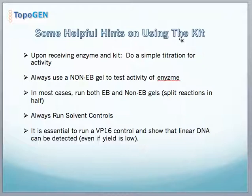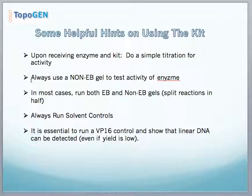Here are some helpful hints on using the kit. When you get the kit and enzyme, it's a great idea to do a simple titration for activity. These enzymes are expensive, difficult to produce, and unstable, so make sure the product you receive works for you. Do a one, two, three microliter titration of enzyme to ensure good activity. Always use a non-EB gel to test enzyme activity, since the resolution of topoisomers is diagnostic. When testing your drugs, we recommend running both EB and non-EB gels — simply split reactions in half. Be sure to include solvent controls, since DMSO and drug solvents can interfere with the enzyme.